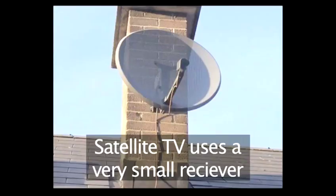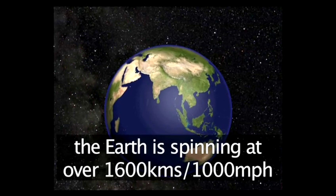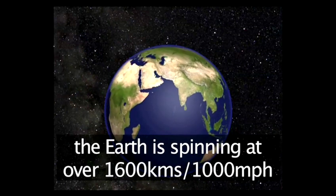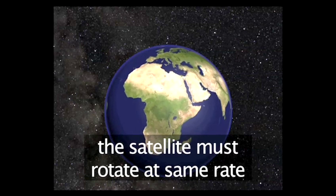To be able to watch satellite TV with such a small receiver means the satellite must remain in exactly the same position. As the Earth is revolving at just over 1,000 miles per hour, the satellite must also have a 24-hour turning period like the Earth's.